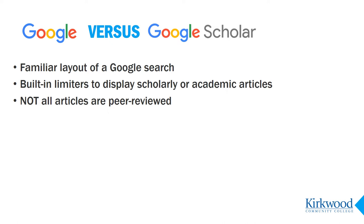It favors articles that have the layout of a scholarly article. Many are from peer-reviewed journals, but some are not. Be aware that how Google defines a scholarly article and how your instructor defines a scholarly article might be different. Always check the source of an article to make sure it meets your academic needs or assignment requirements.